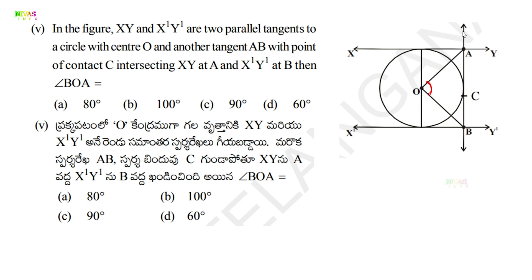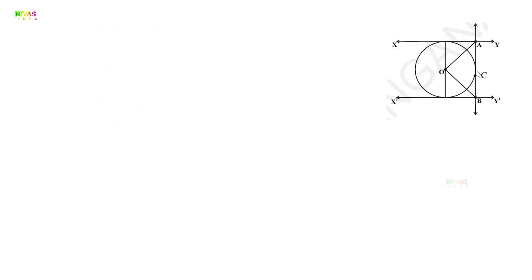It is a parallel line. We draw a line and some angles are formed. We draw lines from the centre O to the points of contact. The radius to a tangent is perpendicular, so we get 90 degrees here, 90 degrees here, and 90 degrees here. By theorem 9.1, the radius is perpendicular to the tangent at the point of contact.